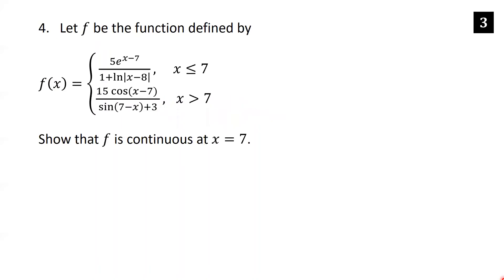Let f be the piecewise function: f(x) equals 5e^(x−7) over (1 + ln|x−8|) for x ≤ 7, and f(x) equals 15·cos(x−7) over sin(7−x) plus 3 for x > 7. We want to show f is continuous at x=7. Continuity requires the limit to exist, f(7) to be defined, and both to be equal. Since f is piecewise, we check left and right limits separately.